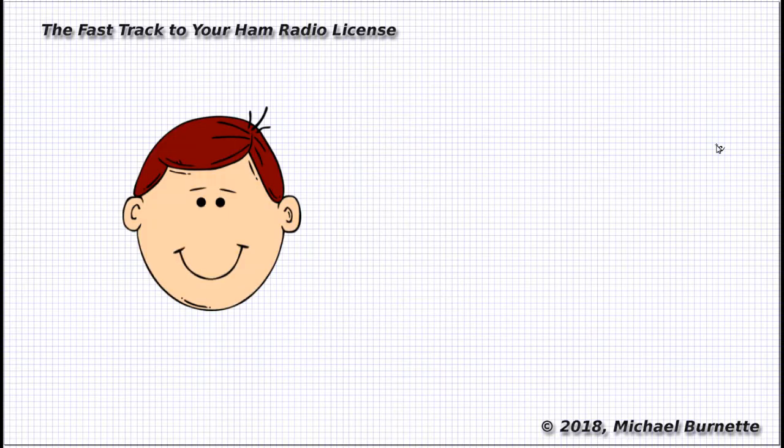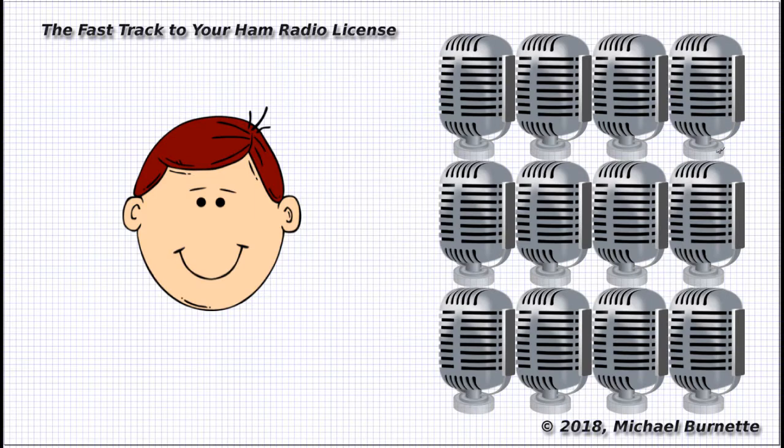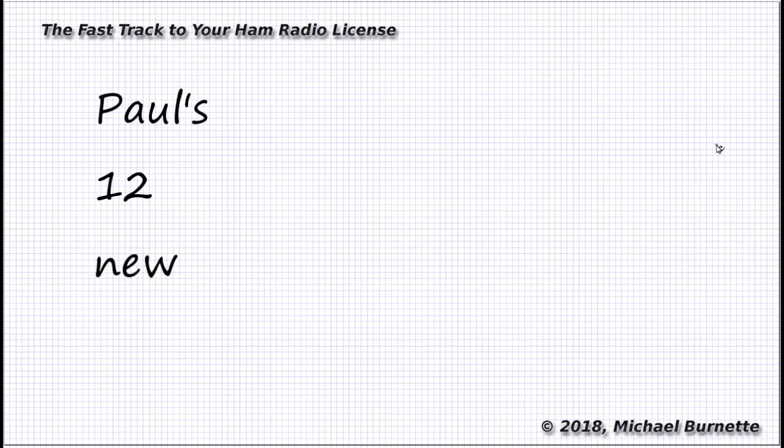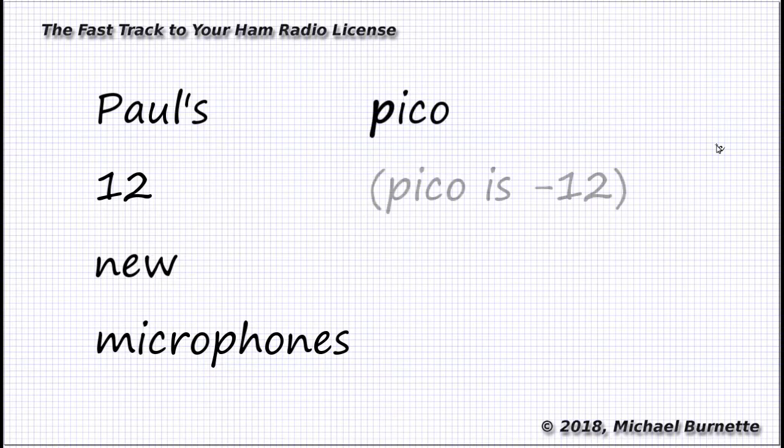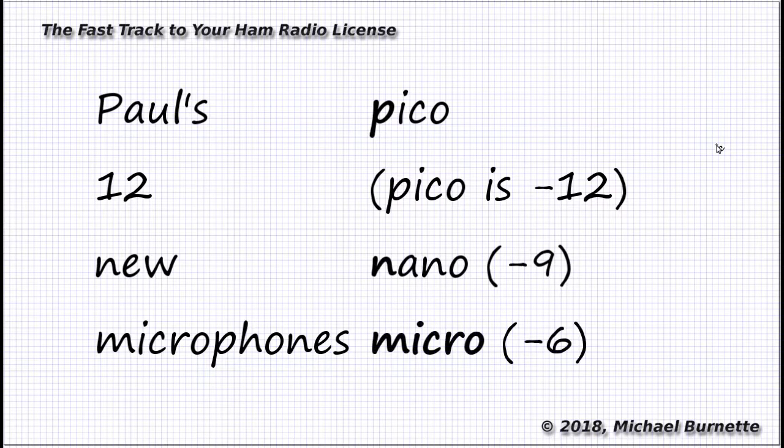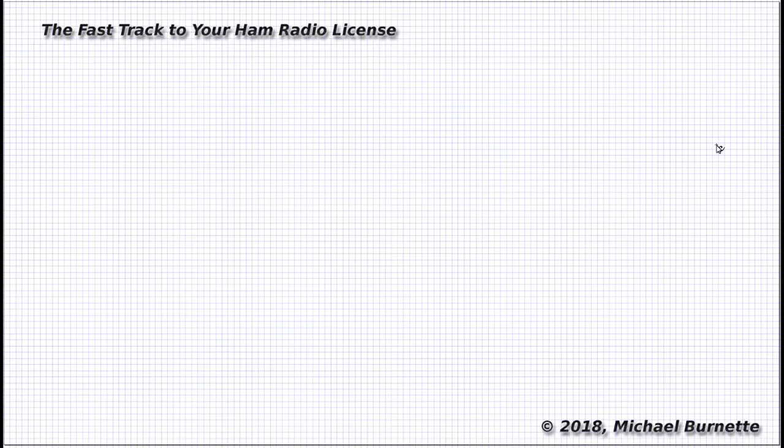This is Paul. Paul is a happy ham, because Paul has 12 new microphones. Paul's 12 new microphones covers the small values we use most on the exam. Pico, 10 to the negative 12th, nano, 10 to the negative 9th, and micro, 10 to the negative 6th.